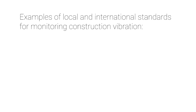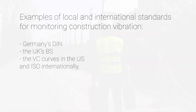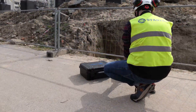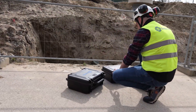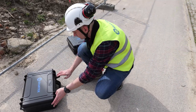Monitoring construction vibration is a critical aspect of ensuring structural safety and compliance with both local and international standards, including Germany's DIN, the UK's BS, the VC curves in the US, and ISO internationally. Monitoring construction vibration effectively requires adherence to a chosen standard method, which dictates the specific procedures to follow.